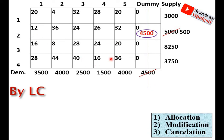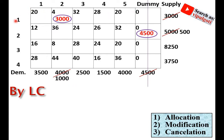Now repeat the step — select the minimum cost from the remaining cells. The cell with the minimum cost is selected and allocated. Looking at the corresponding supply and demand, the minimum of the two values is 3,000, so 3,000 is allocated. Supply and demand are modified accordingly, and 1,000 remains at one destination. The capacity of origin 1 is now exhausted, so that row is cancelled.